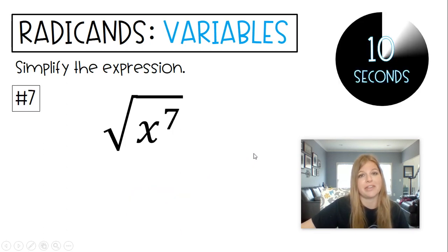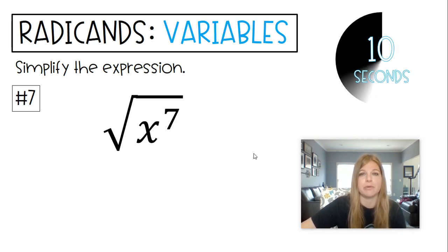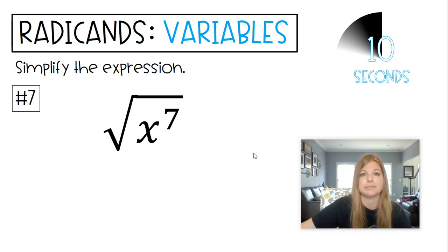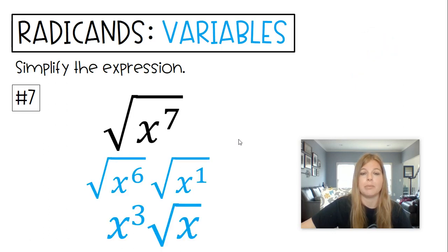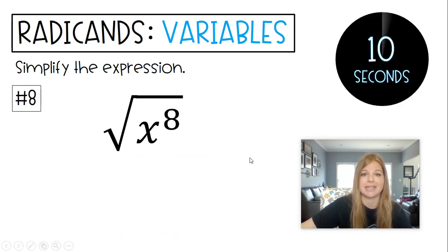Square root of x to the seventh. Hopefully you're following this pattern — everything is about patterns. Break one away from x to the seventh, so we get the square root of x to the sixth times the square root of x to the first, which becomes x to the third times the square root of x.